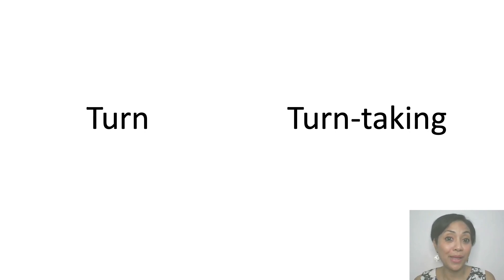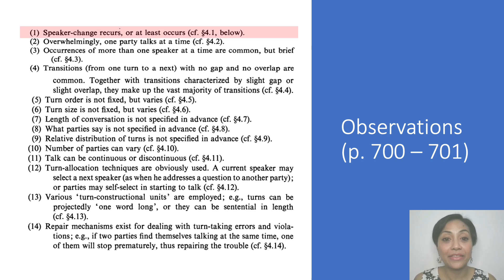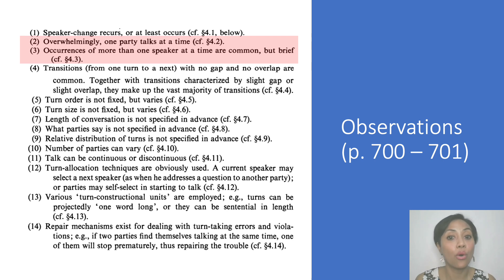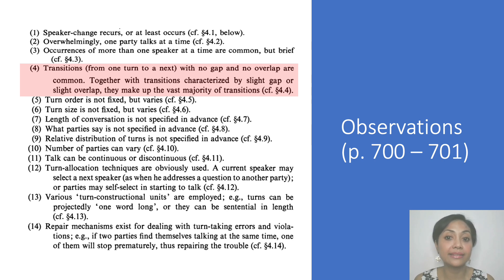Now let's see what they observed in the data. Be prepared — it is a long list. There are 14 of them. The first point is that they observe a consistent regularity in speaker change; people take turns in talking because there's a speaker change. Points two and three are observations about how speaker change occurs — most of the time there's only a single speaker, but sometimes there are also overlaps. Point four is about the transition between speakers, which sometimes happens mostly without a gap. If speaker change occurs without a gap or with a very small gap, there should be something within the ongoing turn that enables the next speaker to start their turn as soon as the current speaker stops.